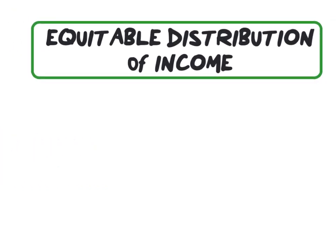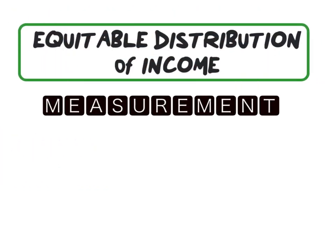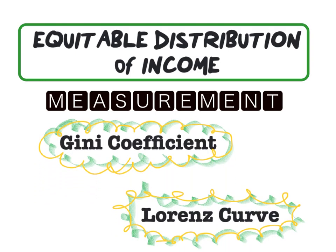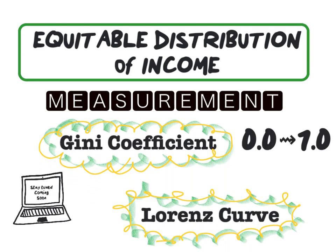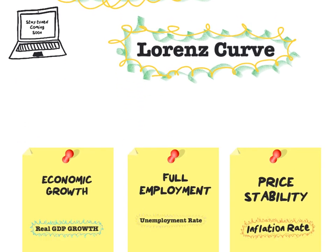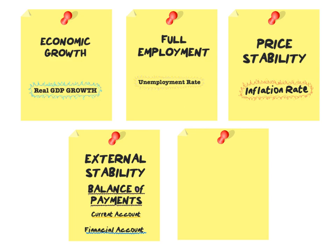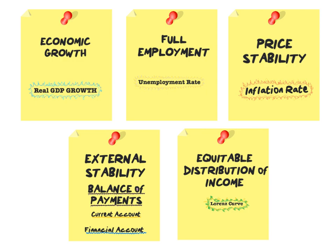The Lorenz curve and Gini coefficient are the measurements used to evaluate income distribution. For a Gini value closer to 0.0, this means that income is equally distributed, as opposed to a value closer to 1.0, which indicates that income is unequally distributed. The last objective: equitable distribution of income, measured by our Gini coefficient and Lorenz curve.